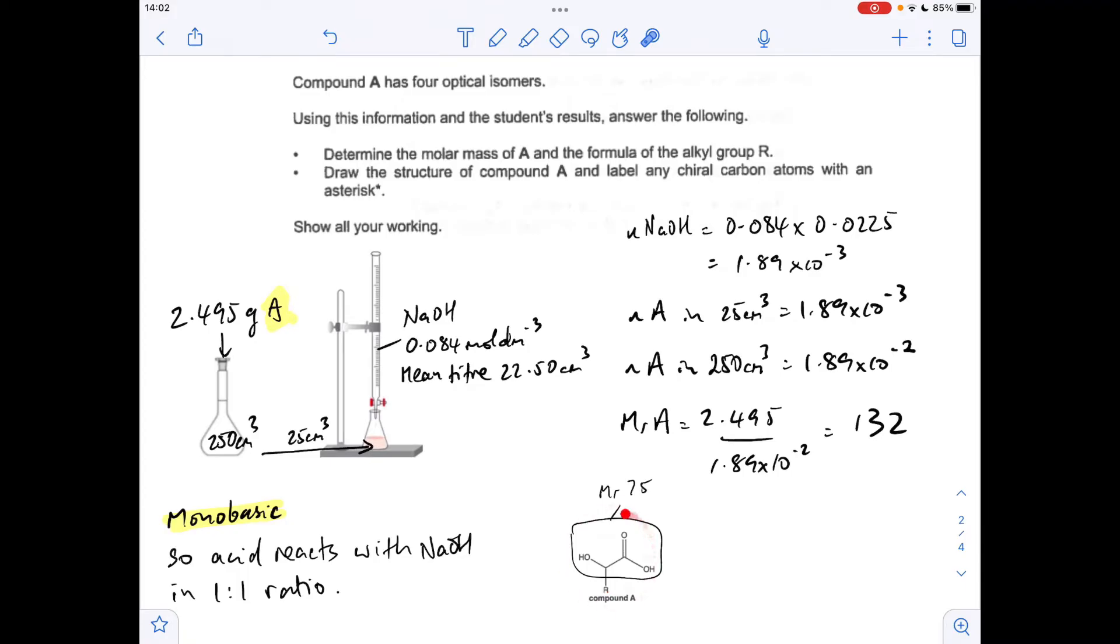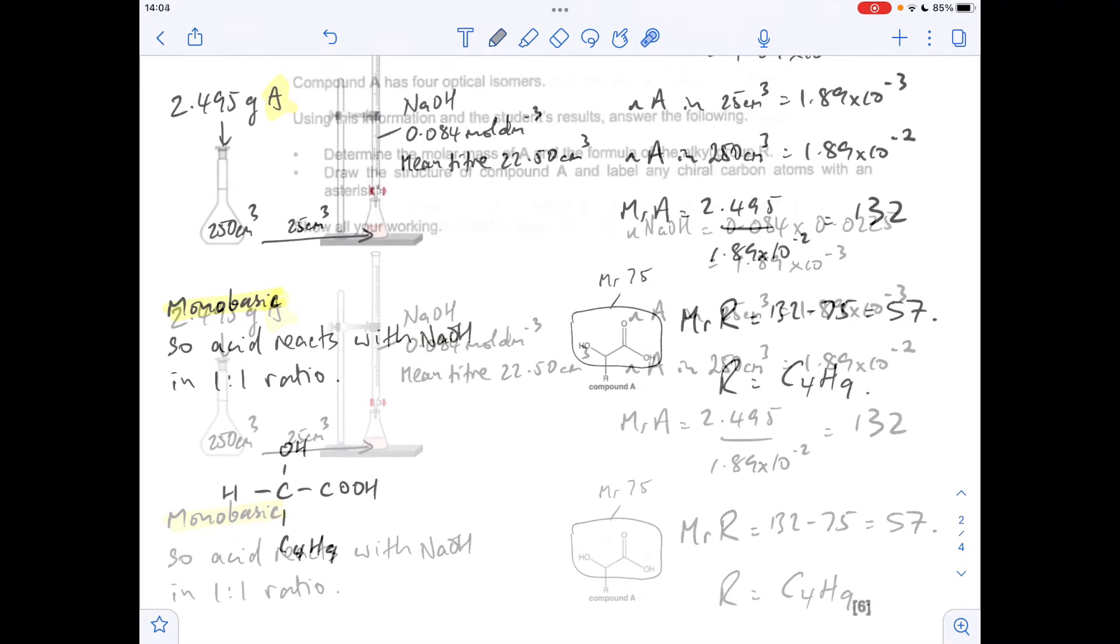So moving on to what R is now. There's compound A, we know now that its MR is 132. This part of it, the bit we do know about, has an MR of 75. So obviously the MR of the R group is going to be 132 minus 75, which comes out at an MR of 57. So it's made from carbon and hydrogen, it's an alkyl group. So how many carbons? Well it looks like four because that will get us to 48, and then another nine hydrogens takes us up to 57. So that means the R group is C₄H₉.